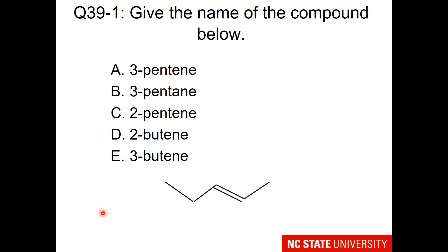Here is a job for you: give the name of the compound below. This is a 5-carbon chain, numbered closest to the end with the double bond. Don't start your homework on alkene naming quite yet, because there is another detail I need to share with you.